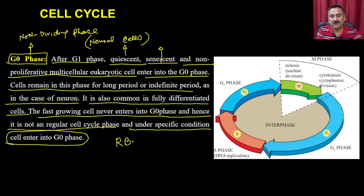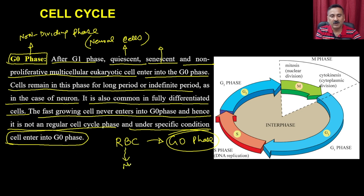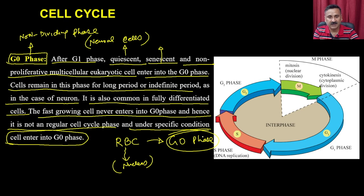For example, RBCs are in the G0 phase because they do not have a nucleus and therefore cannot divide. Neural cells are also non-dividing cells — they still have a nucleus but do not receive external stimuli to trigger division.